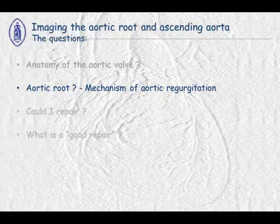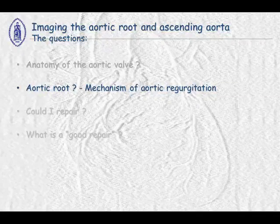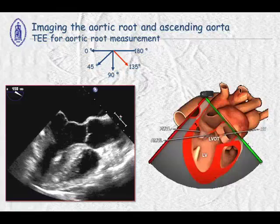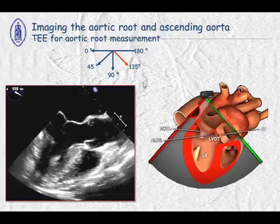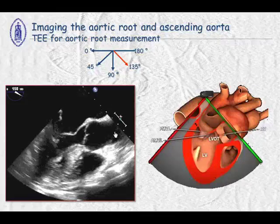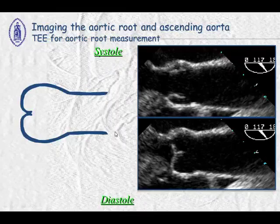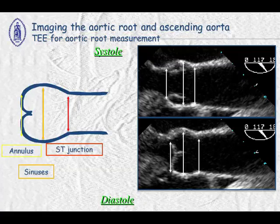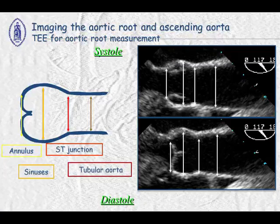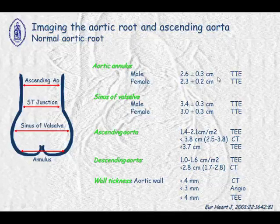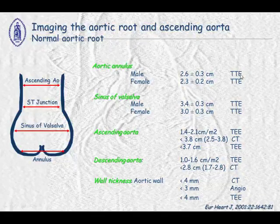The second question is what about the aortic root and what is the mechanism of aortic regurgitation? We suggest using the long-axis view with transthoracic echocardiography, showing the left ventricular outflow tract and the aortic root. We will especially take measurements of the annulus, sinuses, sinotubular junction, and tubular aorta. Normal values were published for male and female according to transthoracic echo or transoesophageal echocardiography, and you have to adjust according to body surface area.